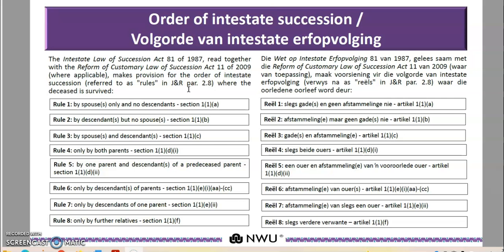Rule number two talks about a situation whereby one dies and he or she leaves behind descendants, but with no spouse or spouses. That is rule number two, which is regulated by section 1(1)(b) of the Intestate Law of Succession.